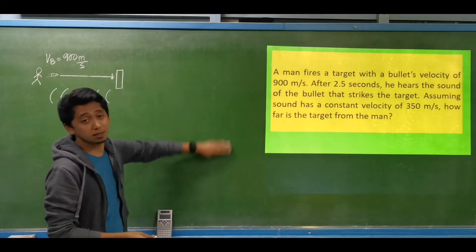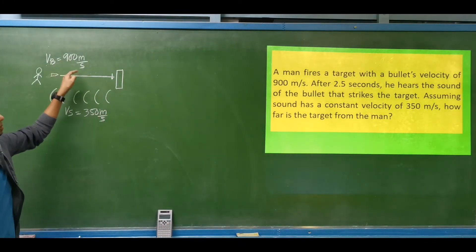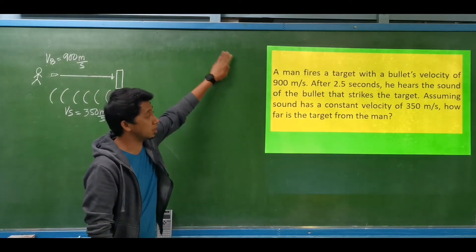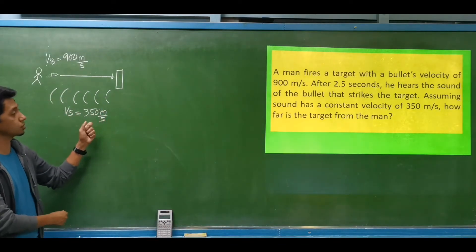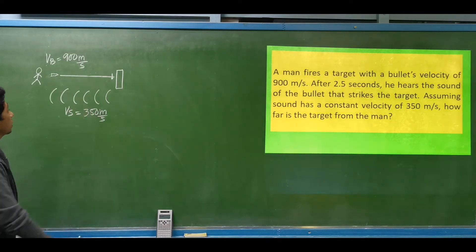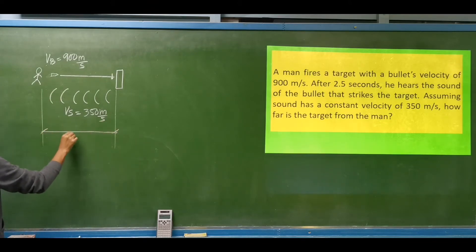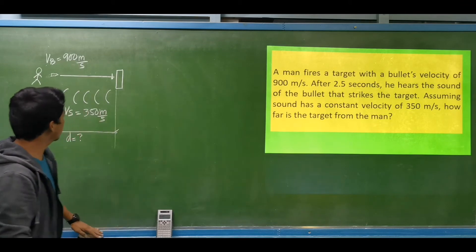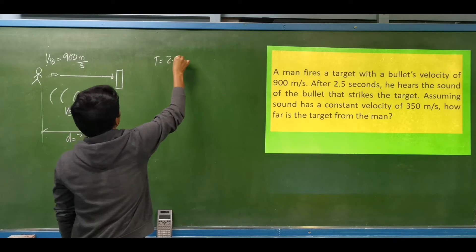Let's have this next example. A man fires at a target with a bullet's velocity of 900 meters per second. After 2.5 seconds, he hears the sound of the bullet striking the target. Assuming sound has a constant velocity of 350 meters per second, how far is the target from the man? We have the velocities of the bullet and sound, and a total time of 2.5 seconds.